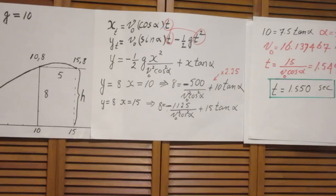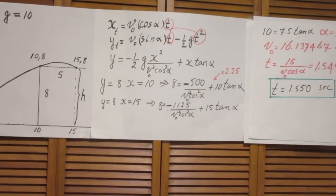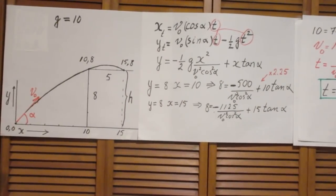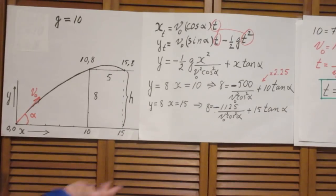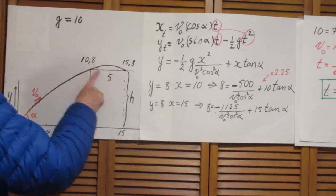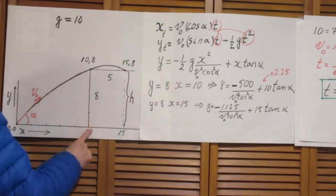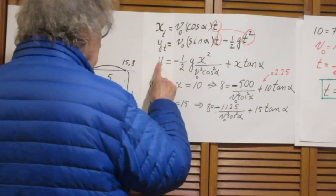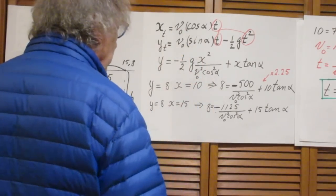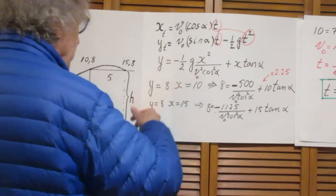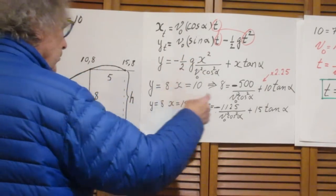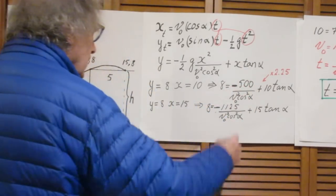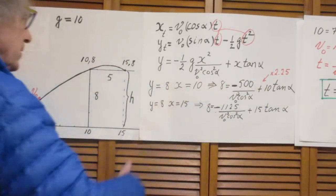Now, I do know, and that's important, that when y is 8 here that x is 10. Right? So I substitute in this equation y equals 8 and x equals 10. One half G is 5. T squared is 100. So here you get your 500. And here you get your 10. Very easy.